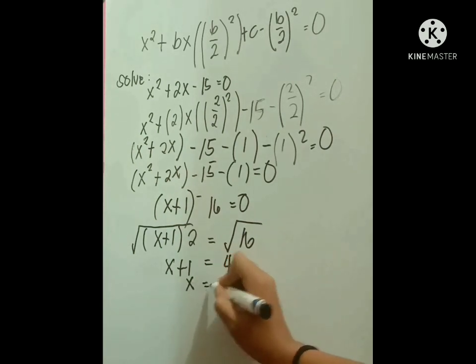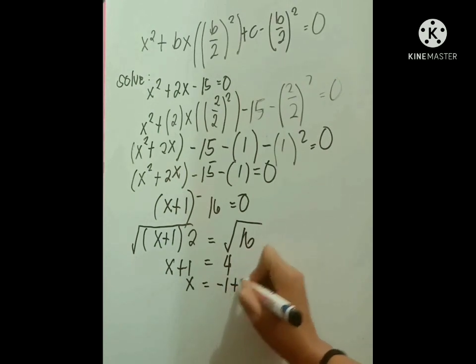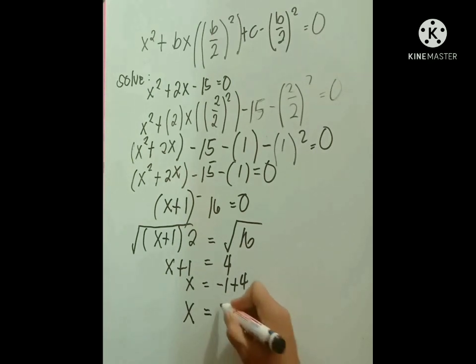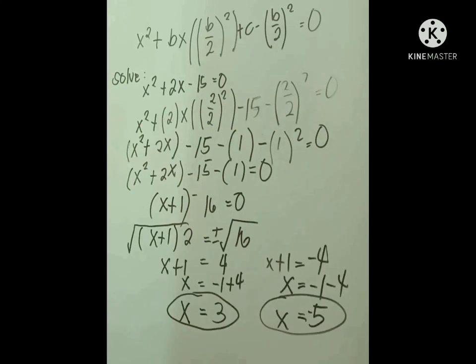After that, we will move 1 to get the x. Remember that if we move the number to the other side its sign will change from positive to negative or negative to positive. So that we can have x equals negative 1 plus or minus 4. So our x sub 1 is 3.